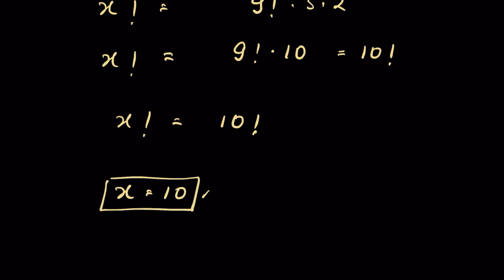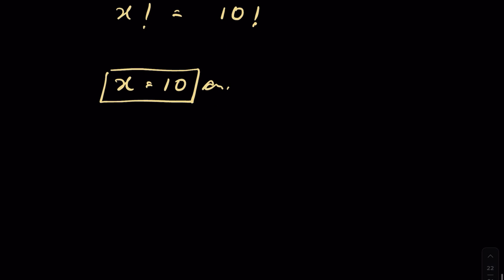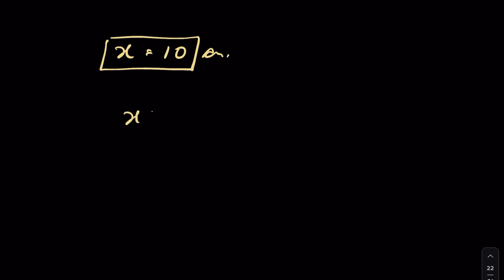So x factorial is equal to 10 factorial, which means x equals 10. The value of x is 10. Let's verify this answer: we have x factorial upon 6 factorial equals 7 factorial. Since x factorial is 10 factorial, the left-hand side becomes 10 factorial upon 6 factorial.